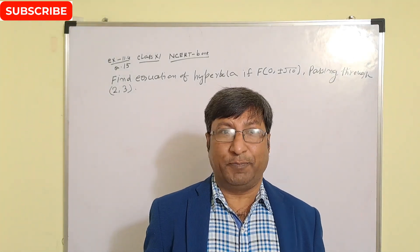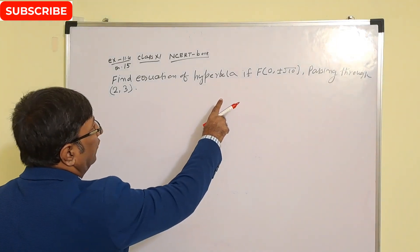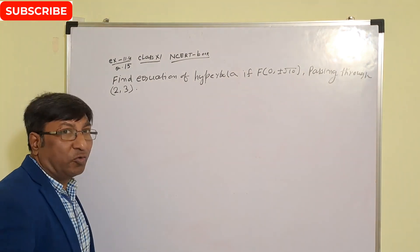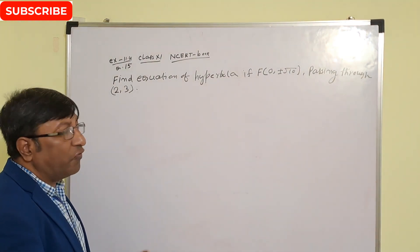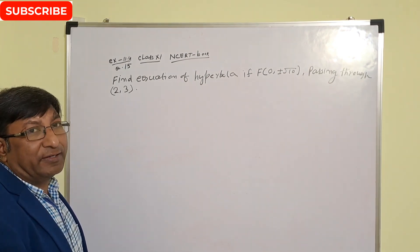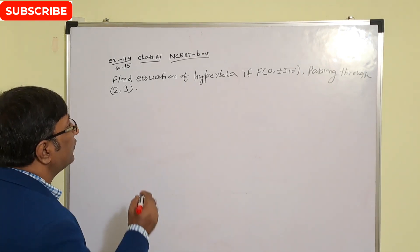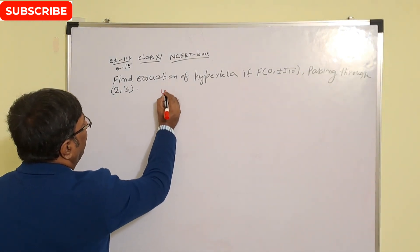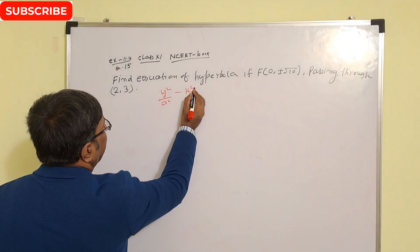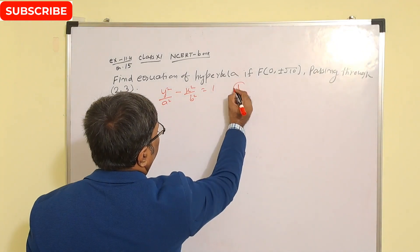Most important question of hyperbola — let us see the question. Find the equation of hyperbola with foci at (0, ±√10) and passing through the point (2, 3). Since the x-coordinate of the foci is 0, the foci lie on the y-axis, so the equation of the hyperbola will be y²/a² − x²/b² = 1. This is equation number 1.